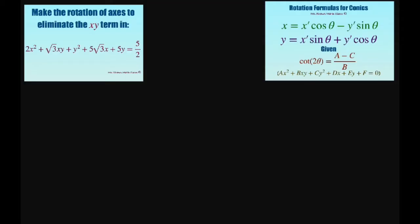We're going to use these formulas, and in order to use them I'm going to have to find my theta, my angle. And what we use is the fact that cotangent of 2 theta is going to equal A minus C divided by B.